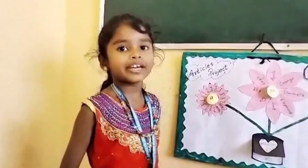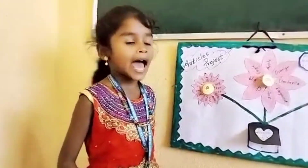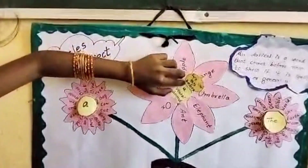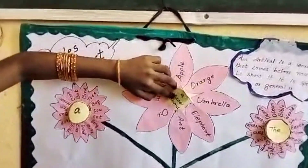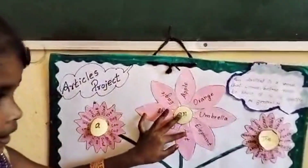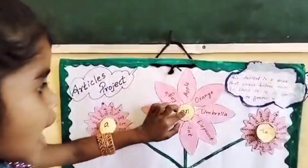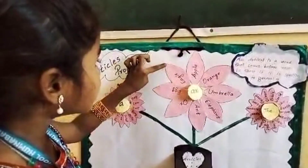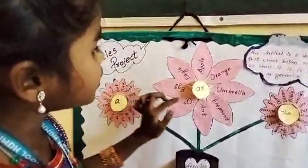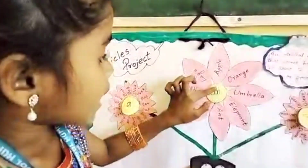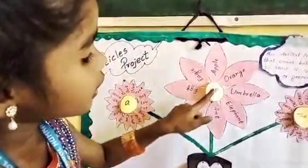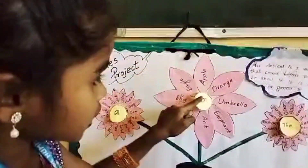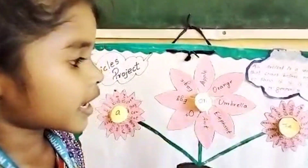When do we use An? We use An before a vowel sound. Example: an apple, an eagle, an ox, an ant, an elephant, an orange, an umbrella.